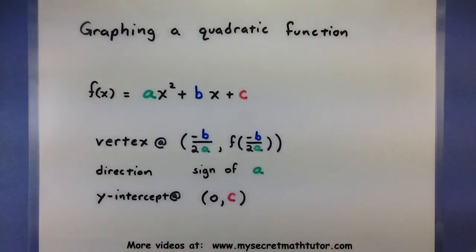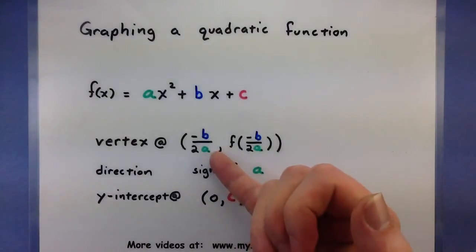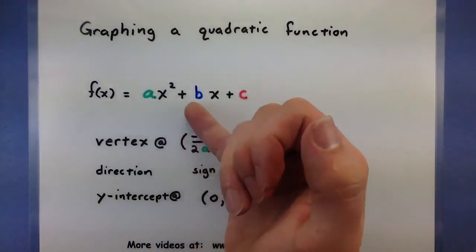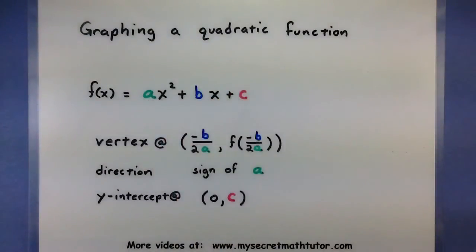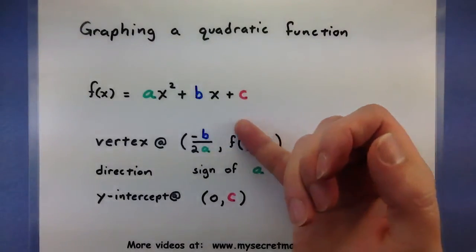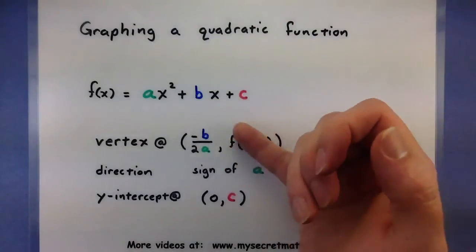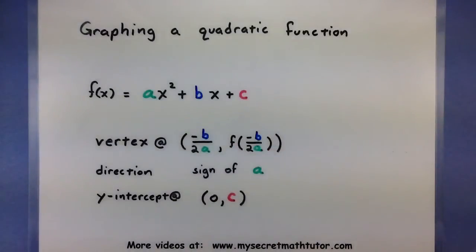So a very important key point on a quadratic graph is where the vertex is located. You can figure out where it's located by using the formula negative b over 2a, so using these two values. What that will give you is the x-coordinate of the vertex. Now if you want the y-coordinate, take the value that you received and plug it into the function. This will give you the other half of the vertex.